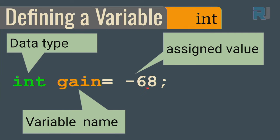The binary representation of 12 is 1100. After uploading the hex version, 'C' is printed, because C in hexadecimal equals 12.